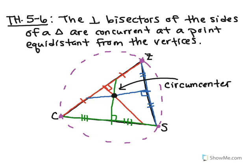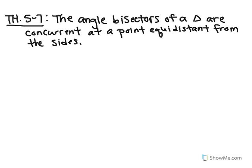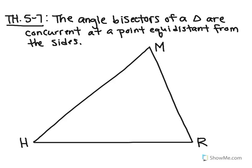Let's take a look at another kind of special point of concurrency. Here's our next theorem: theorem 5-7. It says the angle bisectors of a triangle are concurrent at a point equidistant from the sides. Let's take a look at that picture. Here's our triangle with vertices M for Mathis, R for Rebecca, and H for Hayden. Let's take a look at the angle bisectors of this triangle.